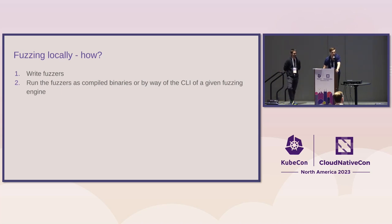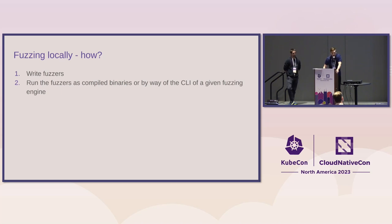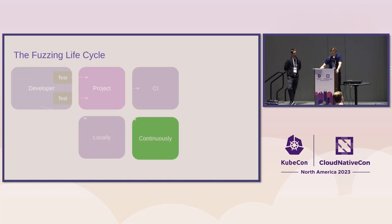You can either compile the fuzzers into binaries and invoke them on your command line, or you use some kind of CLI, which is what Golang enables through their test CLI tool. I want to go back to fuzzing continuously a bit more: having gone through all three ways of running, let's look a bit deeper into fuzzing continuously, because it's a very important component of fuzzing.